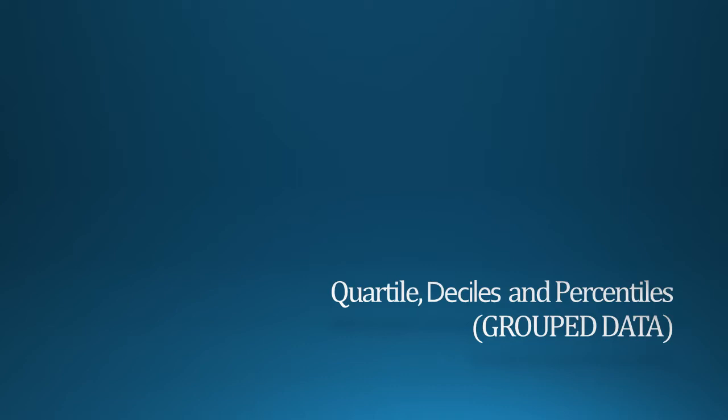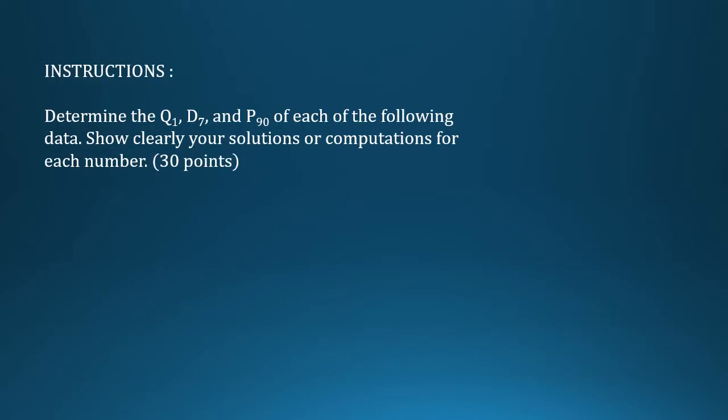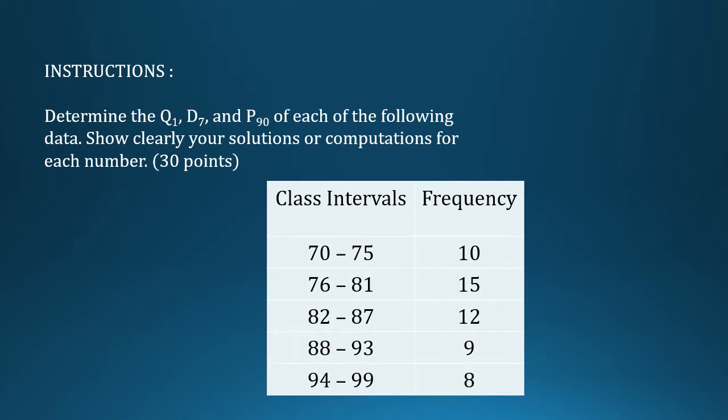decile, and percentile with grouped data. The instruction is: determine Q sub 1, D sub 7, and P sub 90 of each of the following data. Show clearly your solution and computation for each number. This is our given data.